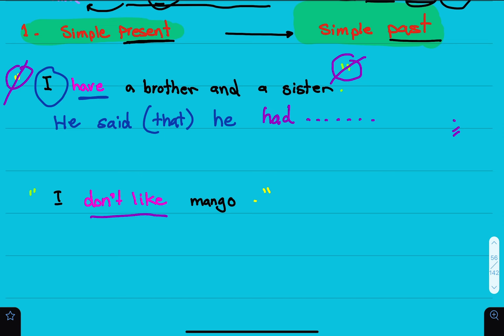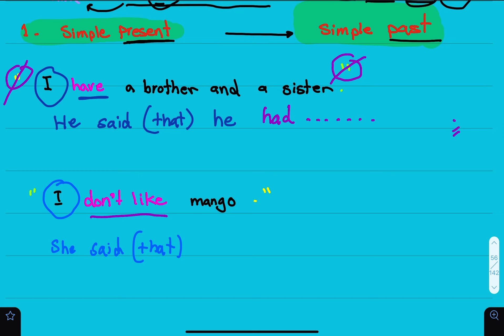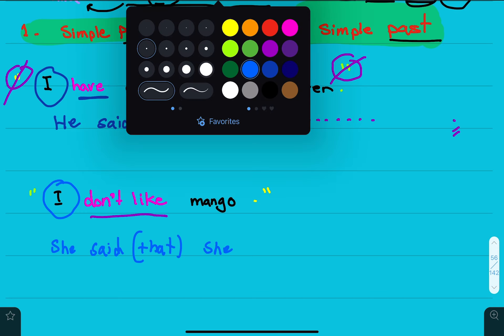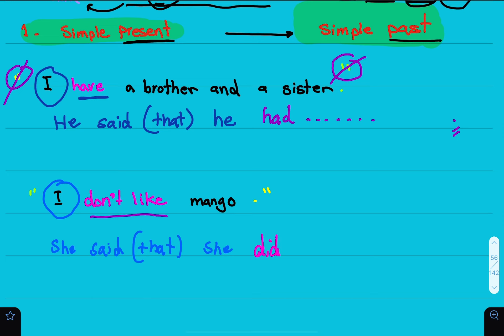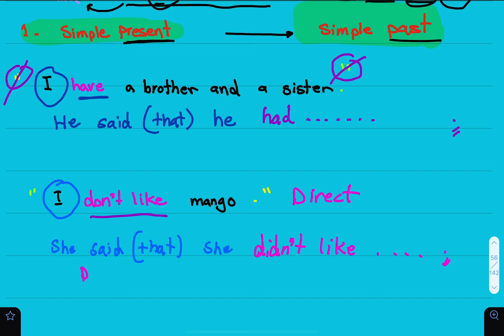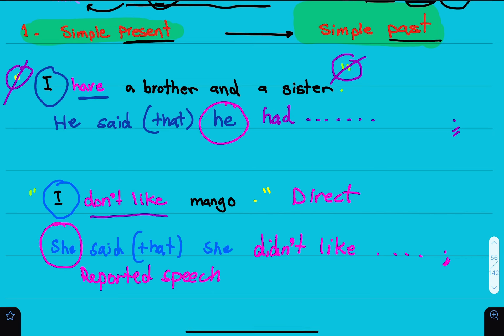Another example: 'I don't like mango.' We can say she said that she didn't like mango. The pronoun 'I' changes to 'she', and 'don't' becomes 'didn't'. So the two main things that change are: some pronouns, and the tense. If it was present, it becomes past — a tense before it. That's the principle.